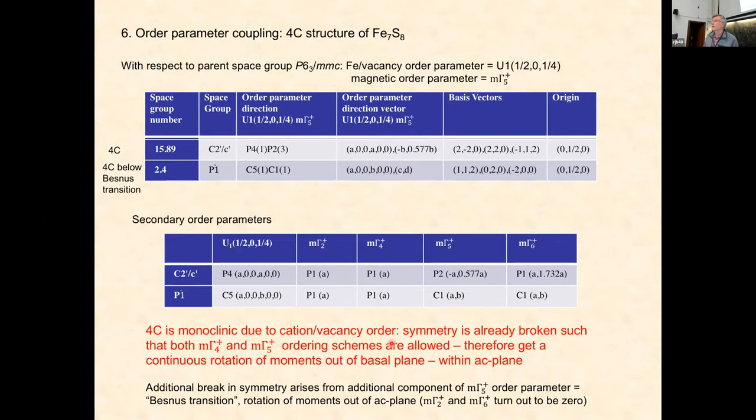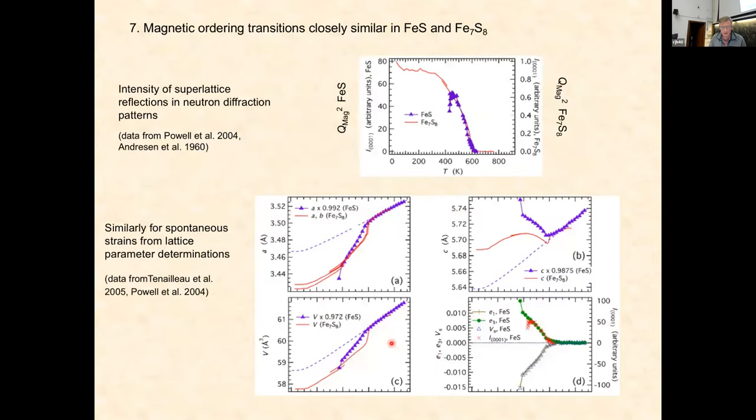If we go through the Besnus transition, you see the differences. We gain here an additional component for the magnetic ordering. To cut a long story short, the cation-iron vacancy ordering makes it go monoclinic. In troilite it's orthorhombic, so it doesn't have a monoclinic symmetry change. The cation-iron vacancy therefore allows, instead of having a spin-flop transition, the moments to go continuously from the mΓ5+ plane to mΓ4+, because it's already broken the symmetry.